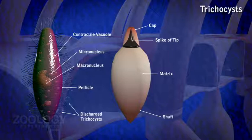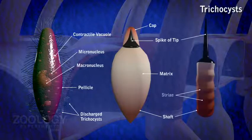Discharge of trichocysts is caused by mechanical, chemical, or electrical stimulation and occurs in a span of a few milliseconds. When fully discharged, the shaft becomes a long, cross-striated rod and measures about 40 microns in length.